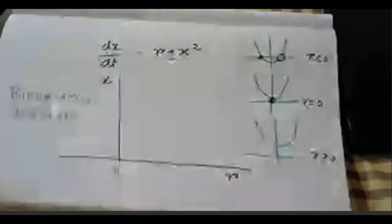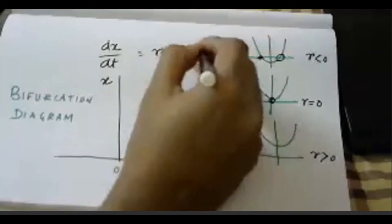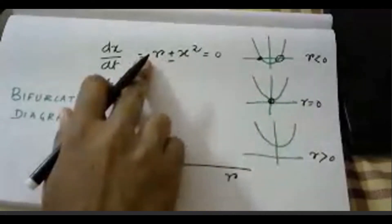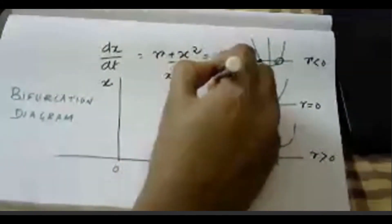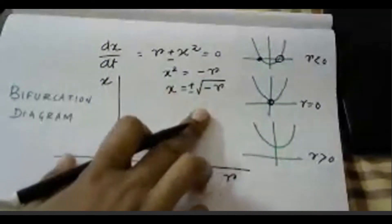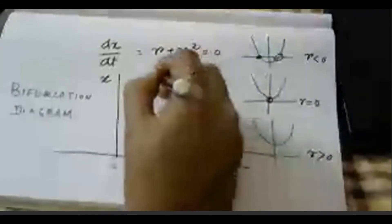For r less than 0, equating the equation to zero: x² = -r, so x = ±√(-r). Since r itself is negative, -r is positive, so this quantity is real, not imaginary. We are convinced about that.